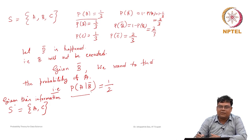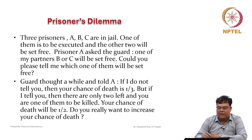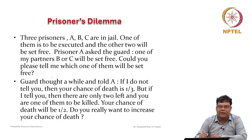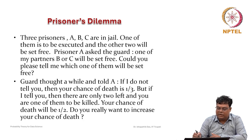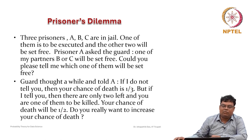That means the probability that A will be executed has increased. The guard said: do you really want to increase the chance of your death? There are three prisoners A, B, C in jail; one is to be executed and the other two will be set free. Prisoner A asked the guard which of B or C will be set free. The guard replied: if I do not tell you, your chance of death is 1 by 3, but if I tell you, only two are left and your chance of death will be 1 by 2. This conditional probability is utilized to find probability more appropriately.